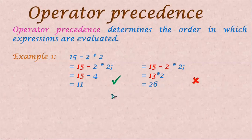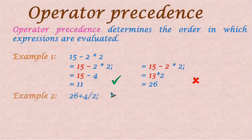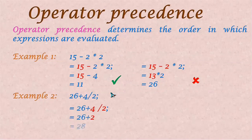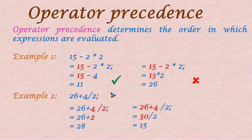Let us understand operator associativity as well. Consider another example: 26 plus 4 divided by 2. Here, 4 divided by 2 is done first, giving 2, and then added to 26 to get 28. The other way — 26 plus 4 equals 30, divided by 2 equals 15 — is wrong, since division has higher precedence.